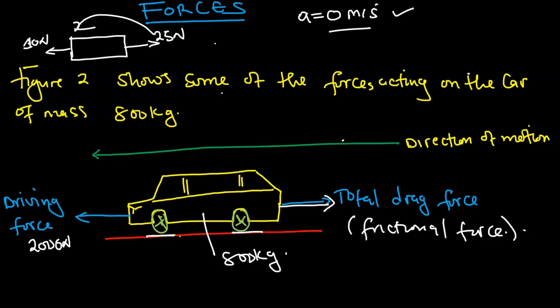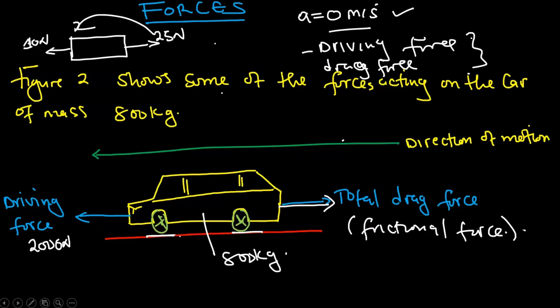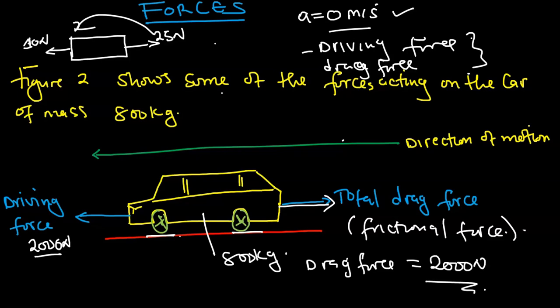When the car is moving at a constant speed, acceleration is zero. At this point, the driving force and the drag force are equal. So if they ask you the size of the drag force, it is simply equal to the driving force. Therefore, the drag force here is also 2,000 Newton — but only when the car is moving at a constant speed or constant velocity.